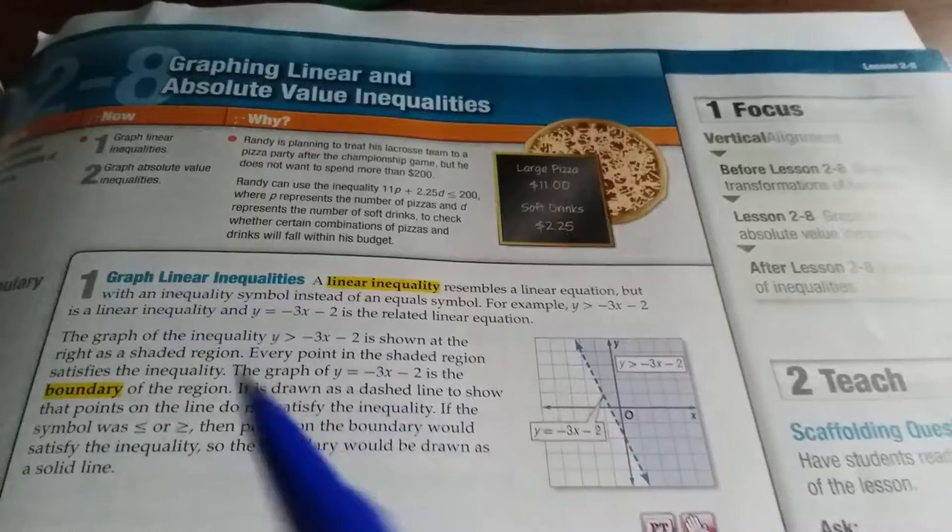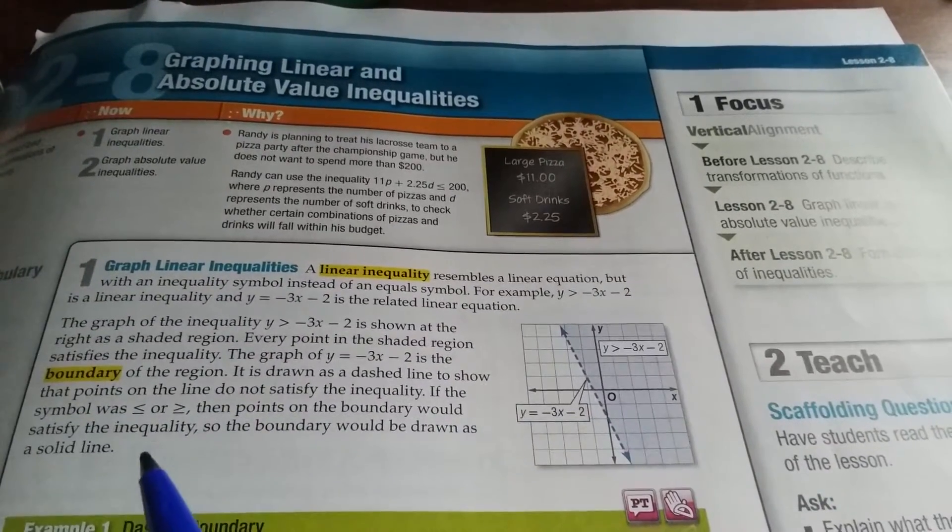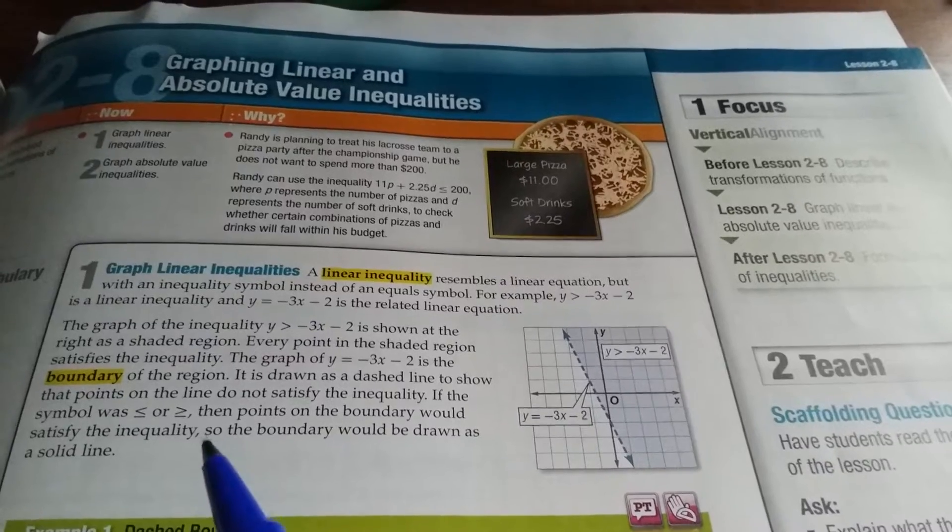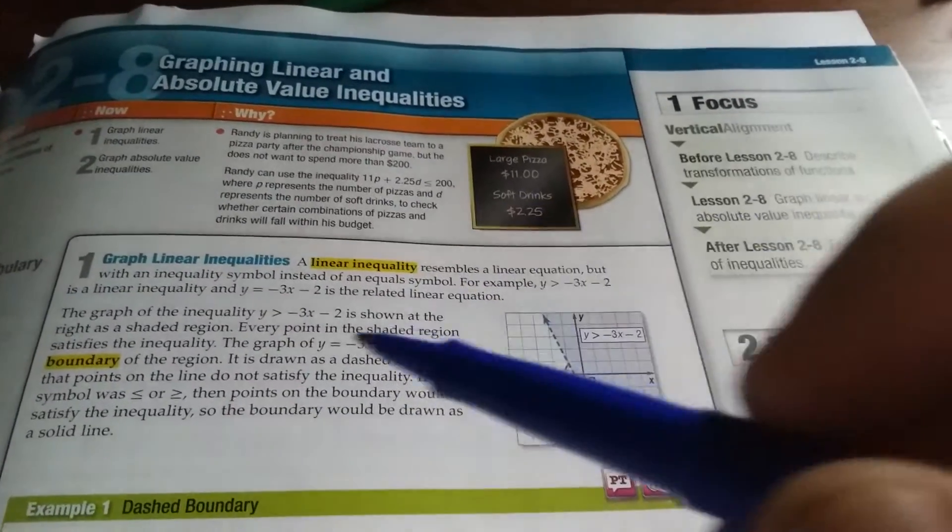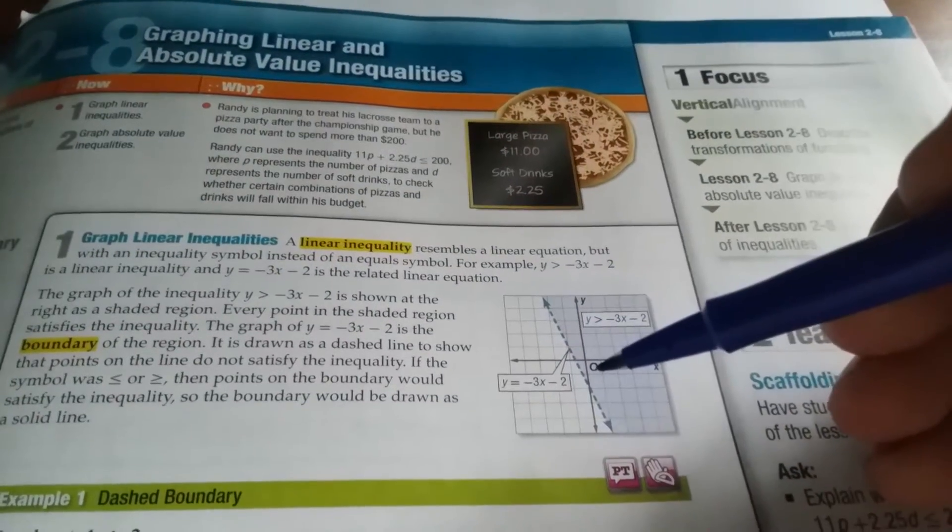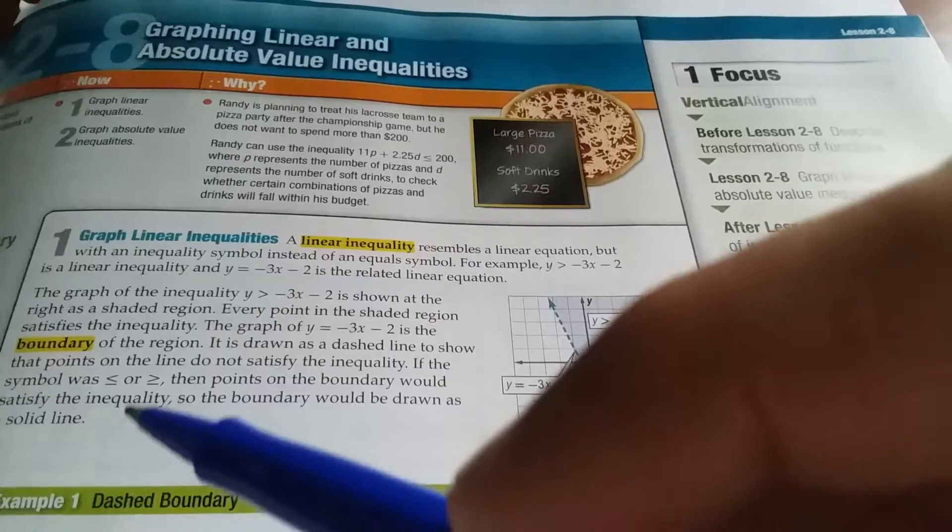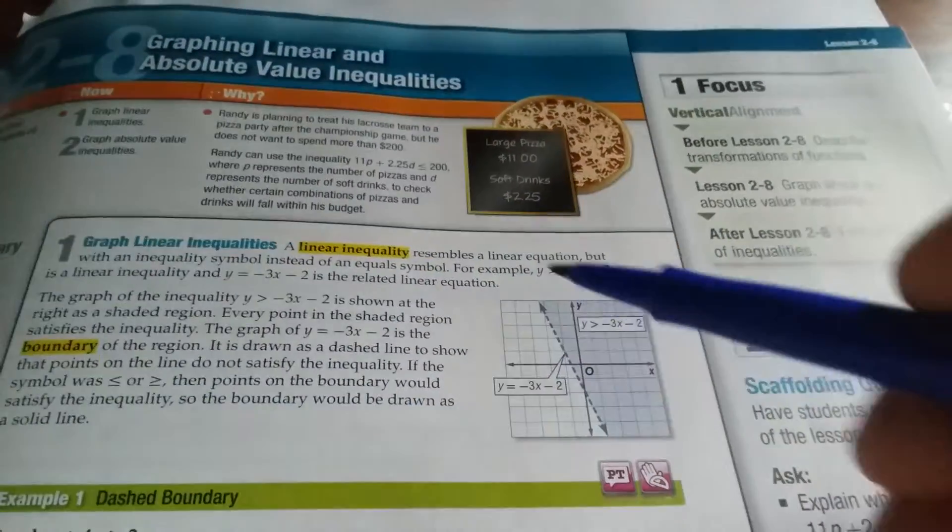If the symbol was less than or equal to or greater than or equal to, the points on the boundary would also satisfy the inequality, so the boundary would be drawn as a solid line. So if you have the greater than or less than symbol, you have a dashed line. If you have the less than or equal to or greater than or equal to with the equal bar underneath, it would be a solid line. So let's look at our first example.